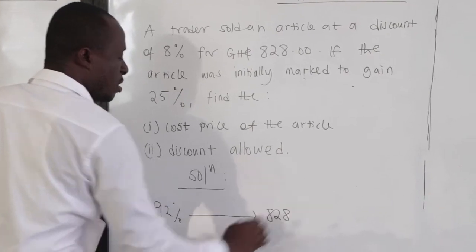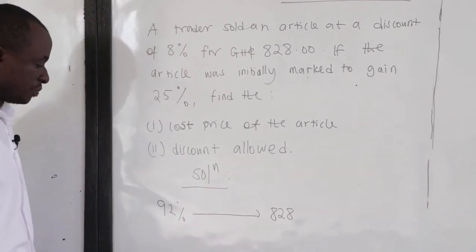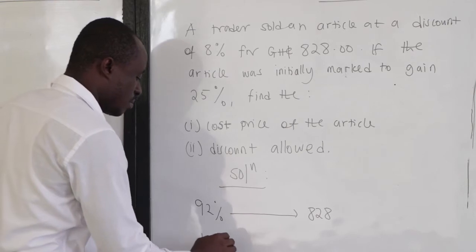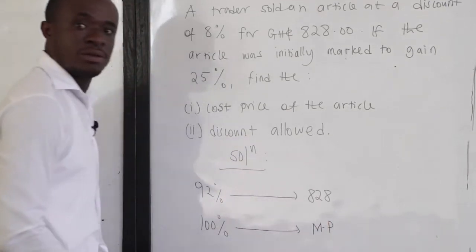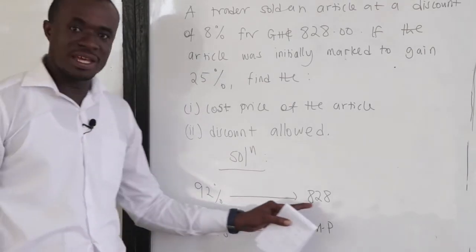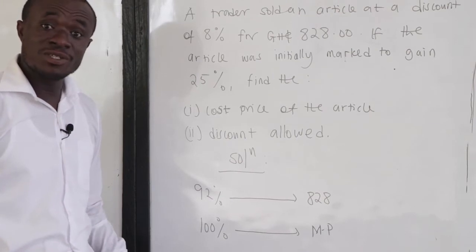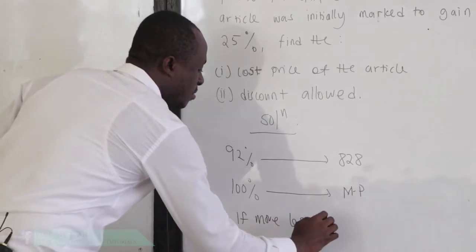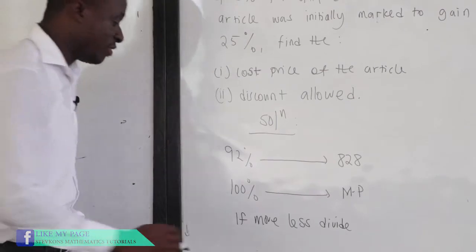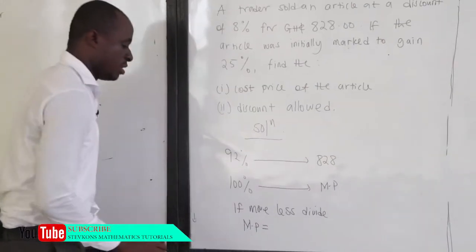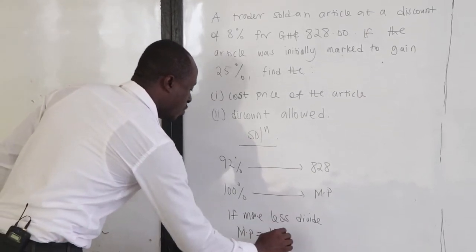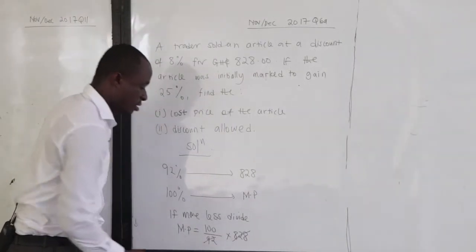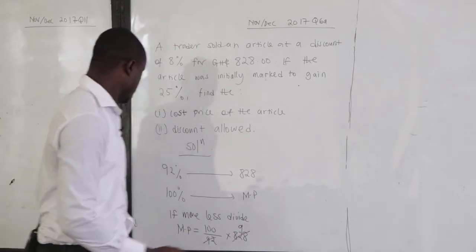So we have 92 percent corresponding to 828 cedis. What is the marked price? The original price — that is 100 percent — would be the marked price. Now, 92 percent is giving us 828. What do you think 100 percent will give us? It will give us more. So if more, let's divide. We have our marked price to be 100 over 92 times 828.